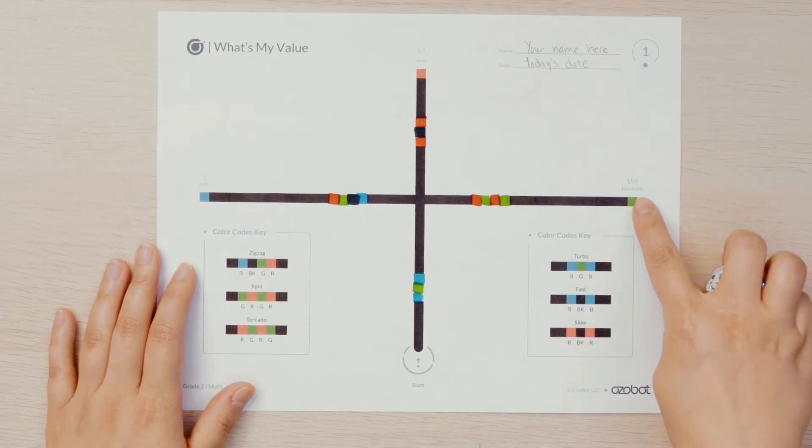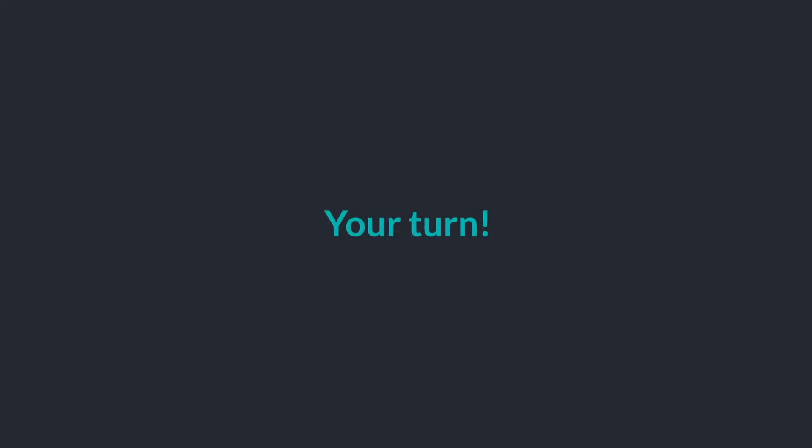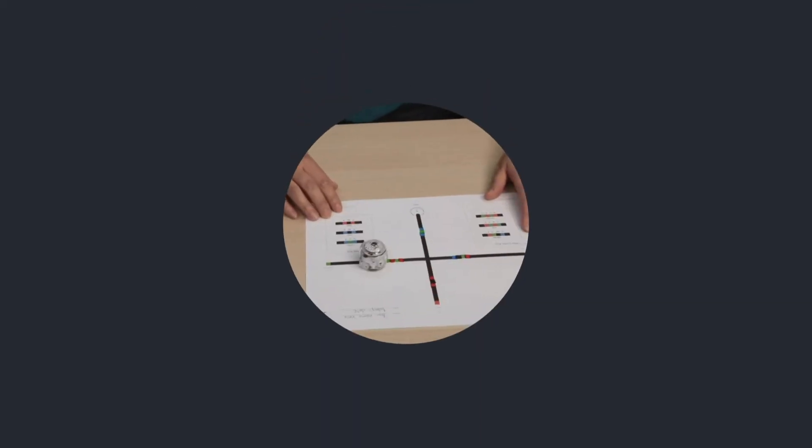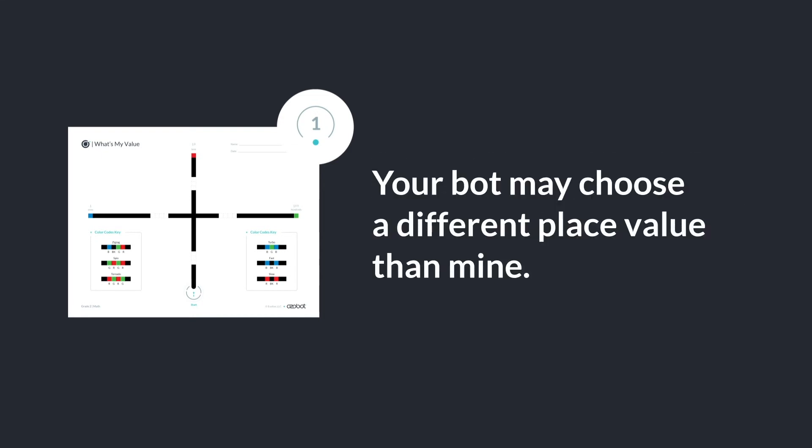My bot chose the hundreds place. I wonder what place value your Ozobot will choose. Can you put your Ozobot on start and watch it choose a place value? Your bot may choose a different place value than mine.